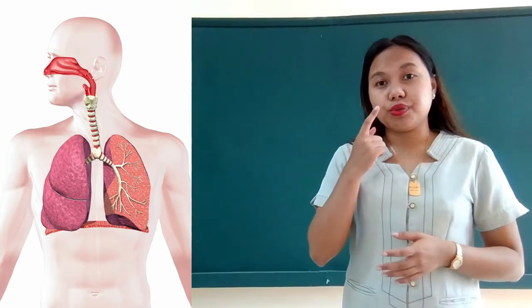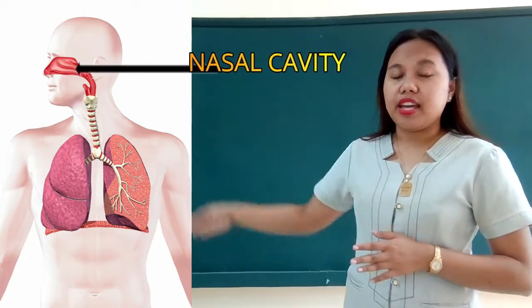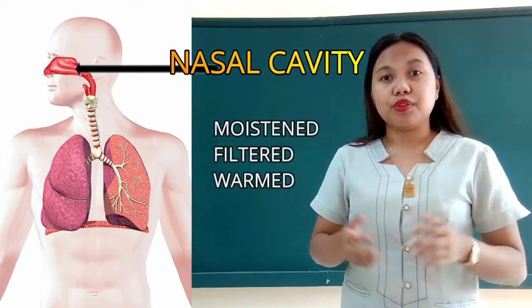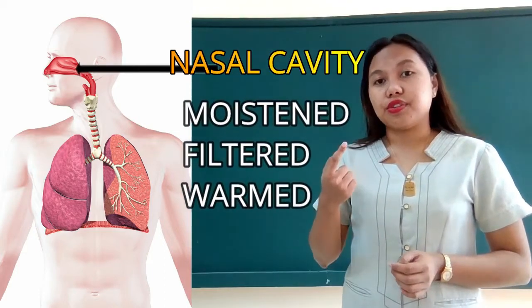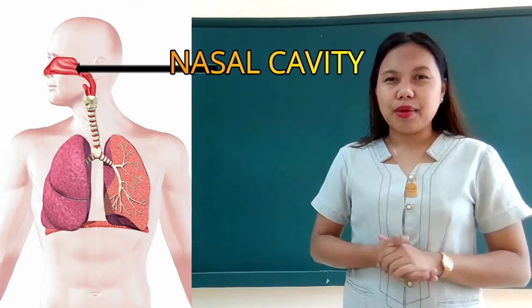As the air enters through our nose, it goes directly to our nasal cavity. In this part, in the nasal cavity, the air is moistened, filtered, and warmed. So that when it enters right through our pharynx, it is already cleansed, or somehow cleaned.